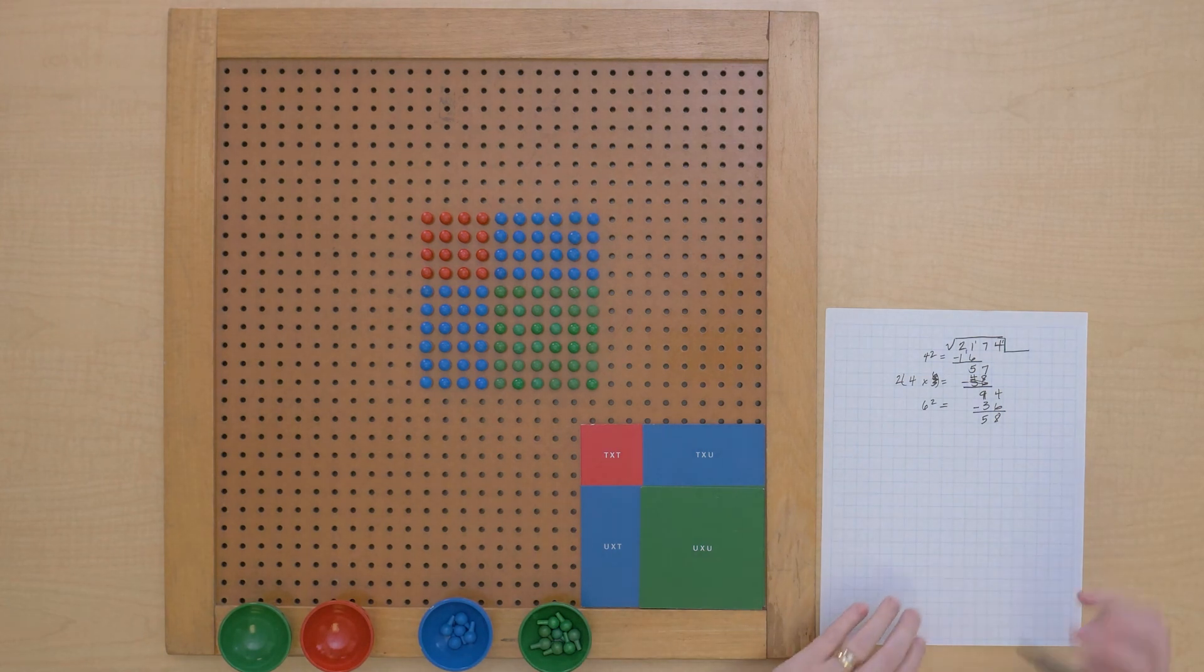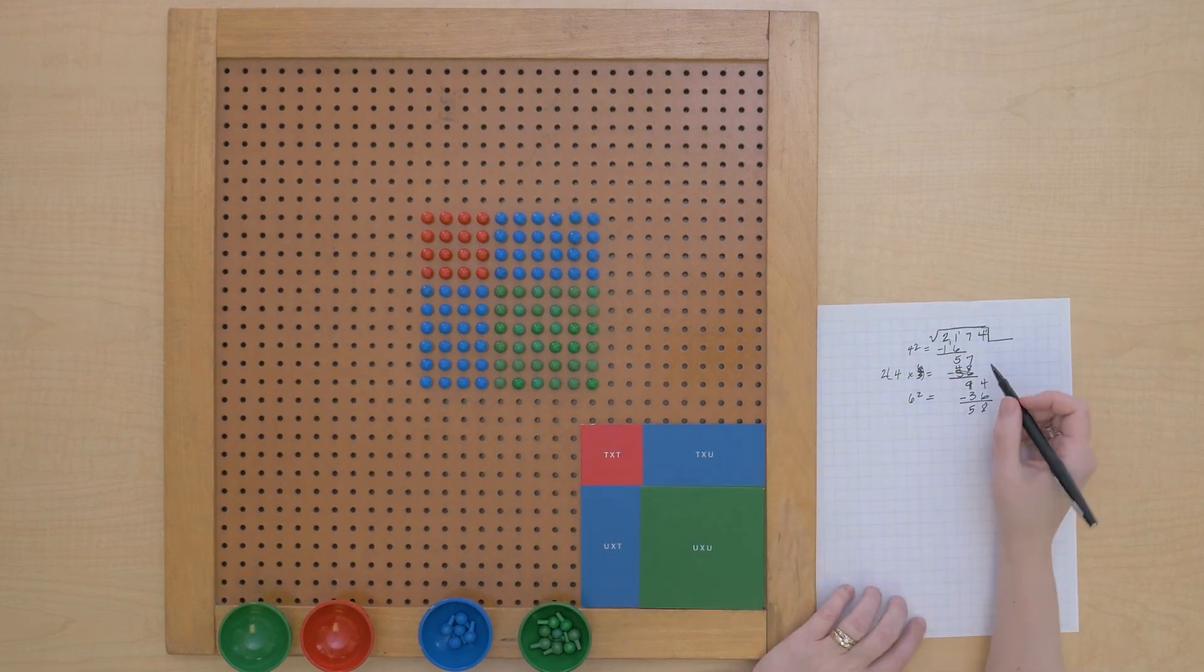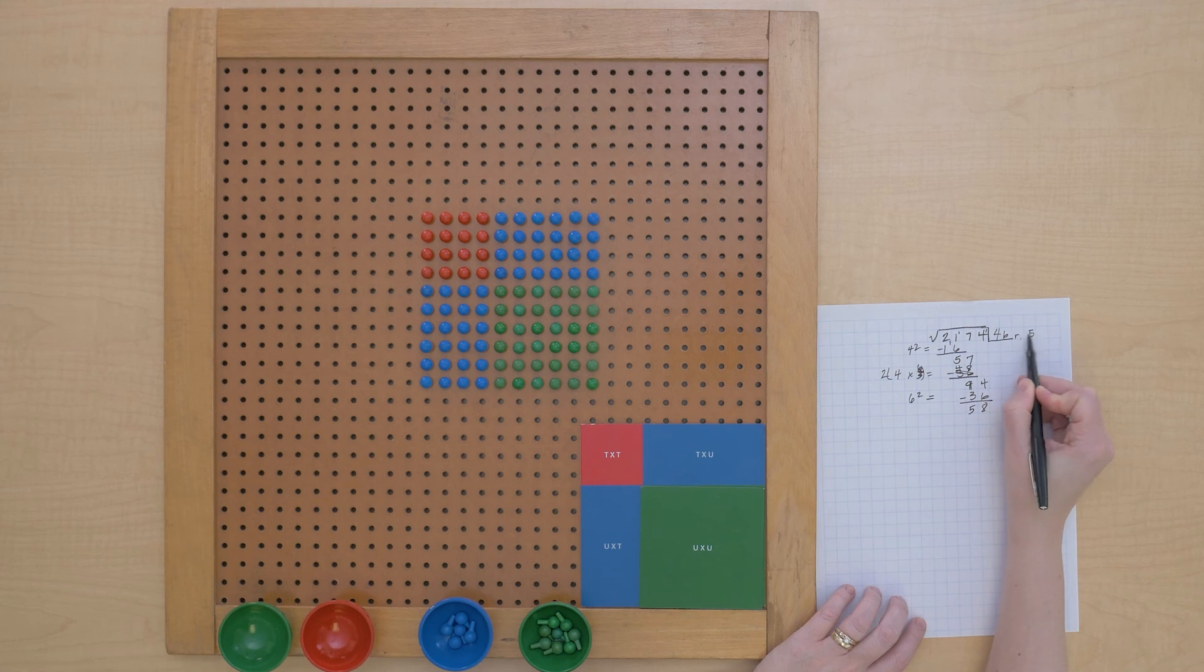So the square root of 2,174 is 46 with a remainder of 58.